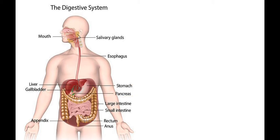Then we have the stomach, pancreas, and large intestine. The large intestine has that name not because it is long but because it has a large diameter. We also have the small intestine, and then the rectum and anus — whatever we cannot digest gets out there.